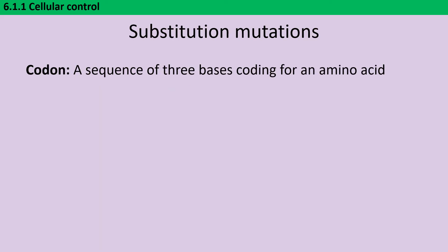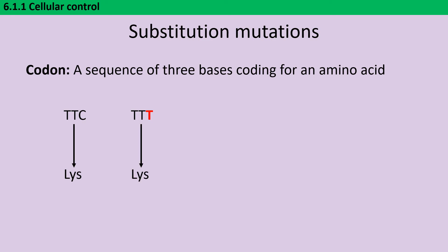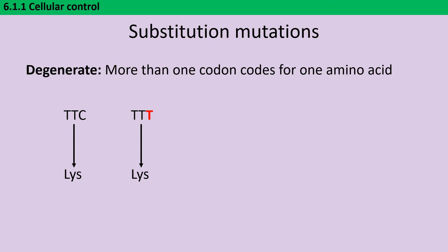To understand the impact of point mutations, it's important to remember that DNA is not read as individual bases — it's read in codons. A codon is a sequence of three bases that codes for an amino acid. For example, the codon TTC codes for lysine. If we have a substitution where instead of TTC we have TTT — cytosine replaced by an additional thymine — that actually still codes for lysine. This is due to the idea that the genetic code is degenerate, meaning more than one codon codes for each amino acid.